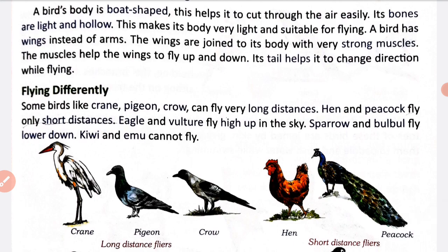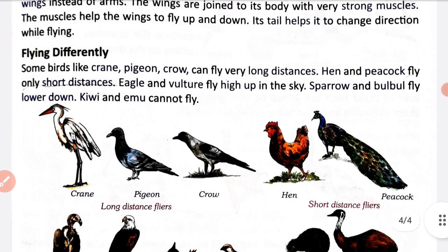The wings are joined to the bird's body with very strong muscles. The muscles help the wings to move up and down. Inke wings strong muscles ke saath inki body se jode hote hain, aur inke muscles birds ki help karte hain up and down udne mein. This tail helps it to change direction while flying - jab yeh birds udte hain to inki jo tail hai wo inki direction ko change karne mein help karti hai.